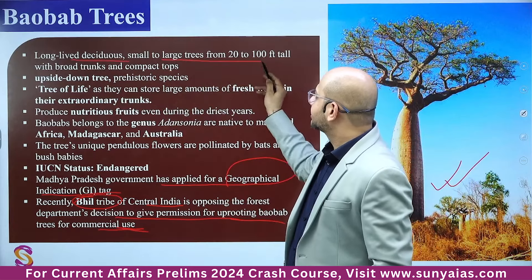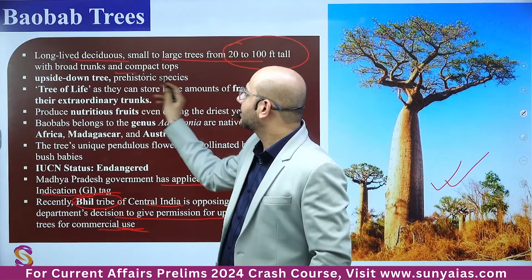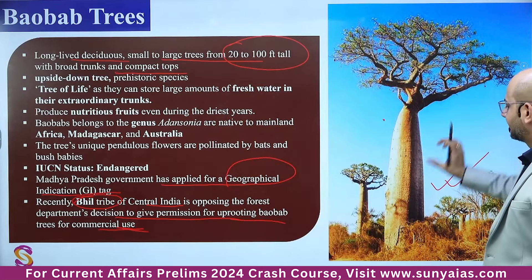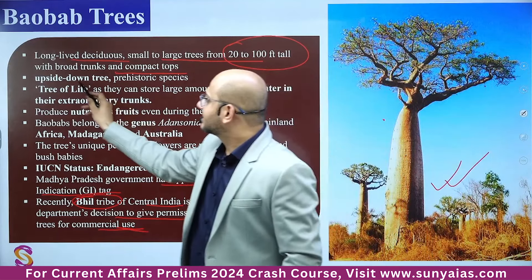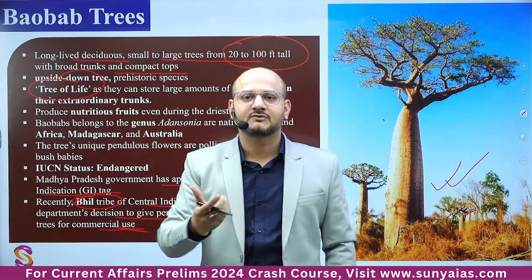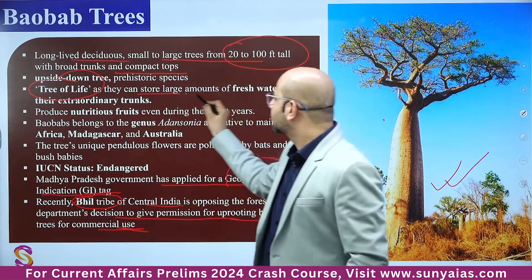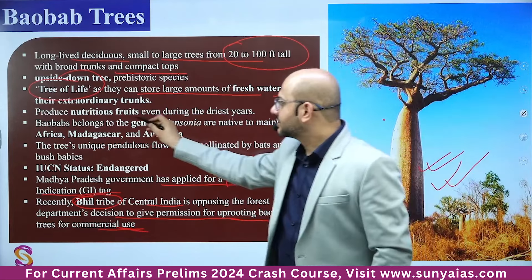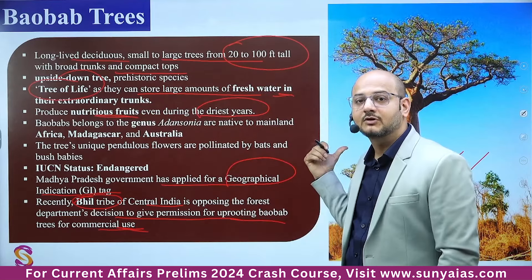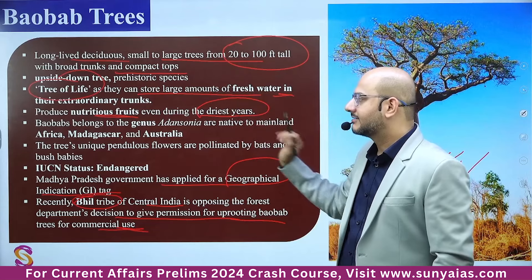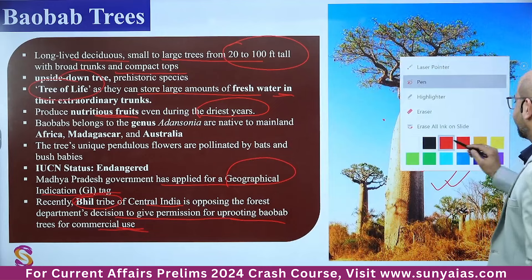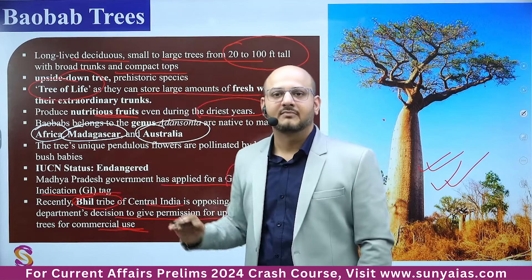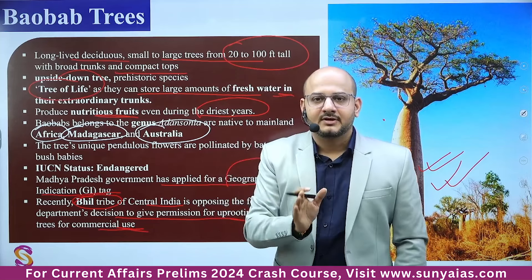Baobab is a long-lived deciduous tree, small to large, ranging from 20 to 100 feet tall, with broad trunks and compact tops — the canopy is not dense. It is also called the 'Tree of Life' as they can store large amounts of fresh water in their extraordinary trunks and produce nutritious fruits even during the driest years. They are native to Africa, Madagascar, and Australia.